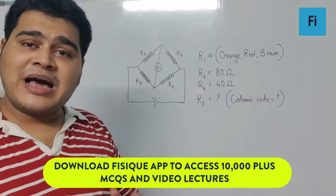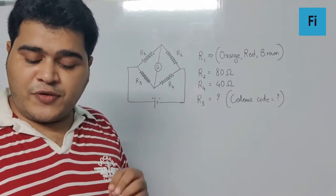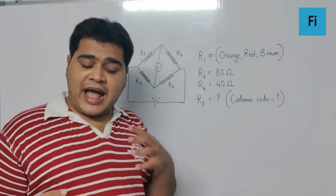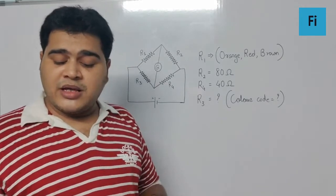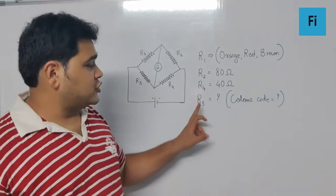The resistors R2 and R4 are 80 ohm and 40 ohm respectively. Assuming that the color code for carbon resistors gives accurate values, the color code of the carbon resistor used as R3 would be—that means we are supposed to find the color code of R3.